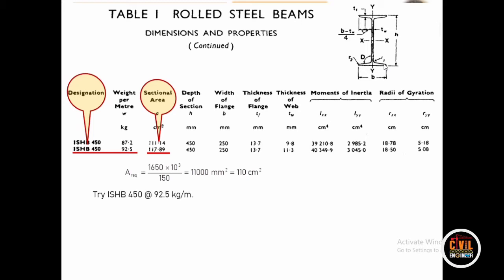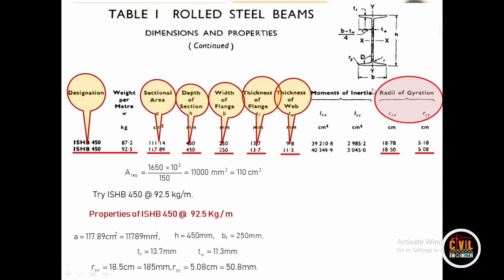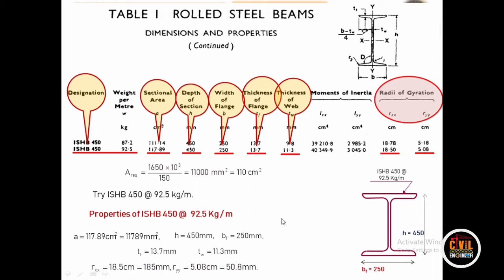For ISHB 450, I noted the properties: area is 117.89 cm², depth of section is 450 mm, width of flange is 250 mm, thickness of flange is 13.7 mm, thickness of web is 11.3 mm, along with the radius of gyration. I am not going with the moment of inertia here. For the rolled section, we have the ready-made radius of gyration, so we will use this property to get the permissible compressive stress from the code.